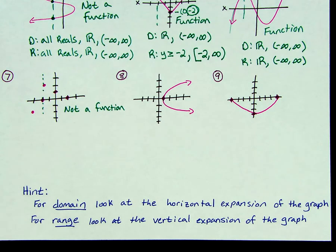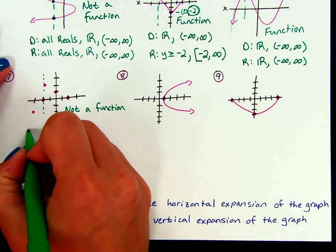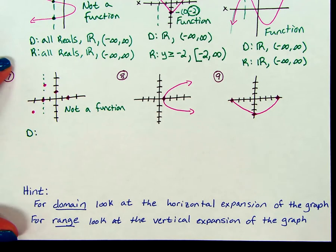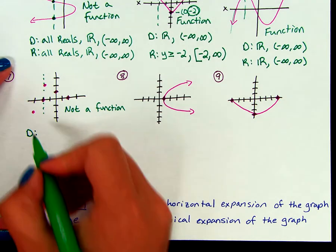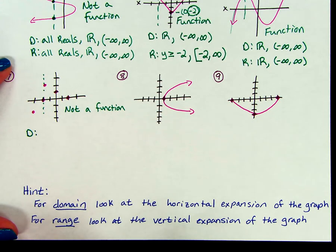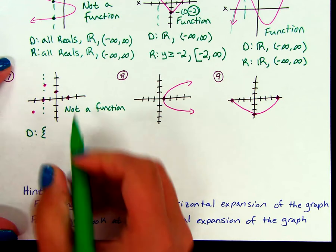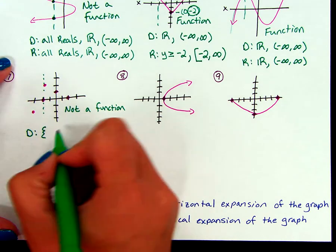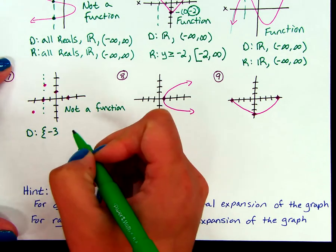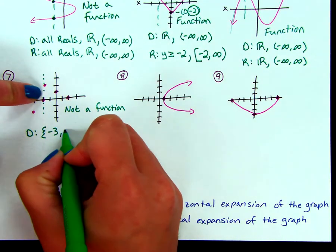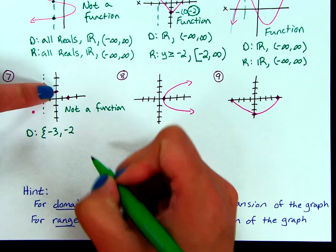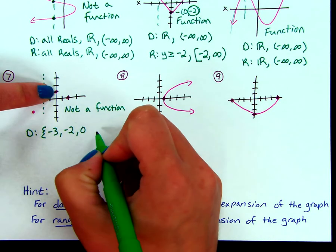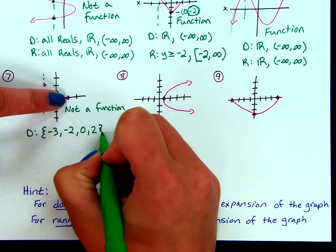Because this is a discrete graph, that means we're doing a list of numbers instead of an inequality or interval notation. Domain is all of my possible x values. Starting with our smallest x value, that looks like it's at negative 3. My next set are these two points, which have negative 2 for their x value. Then there's an x value of 0 and an x value of 2. So there's my domain.